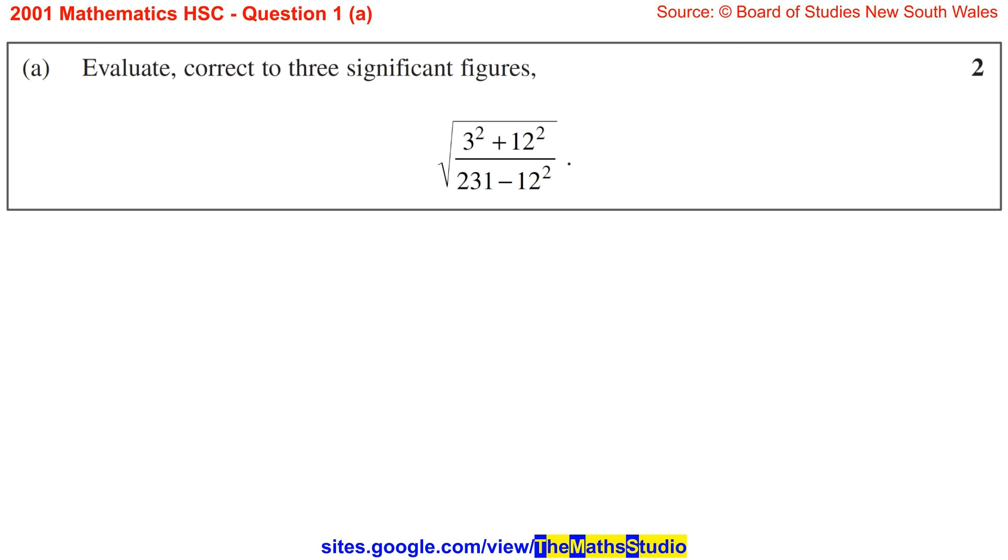Question 1a. Evaluate, correct to three significant figures, the square root of 3 squared plus 12 squared over 231 minus 12 squared.